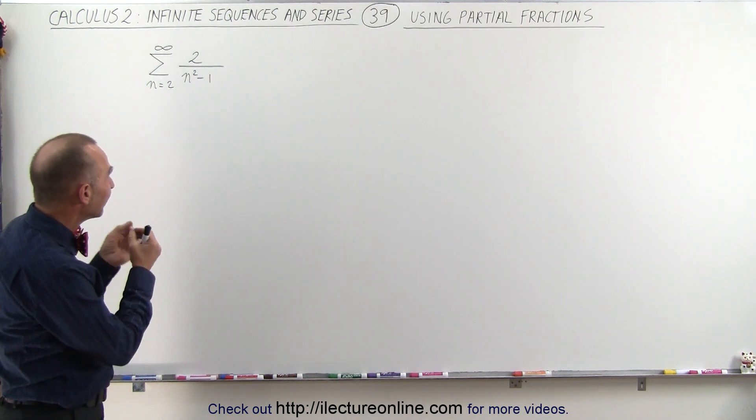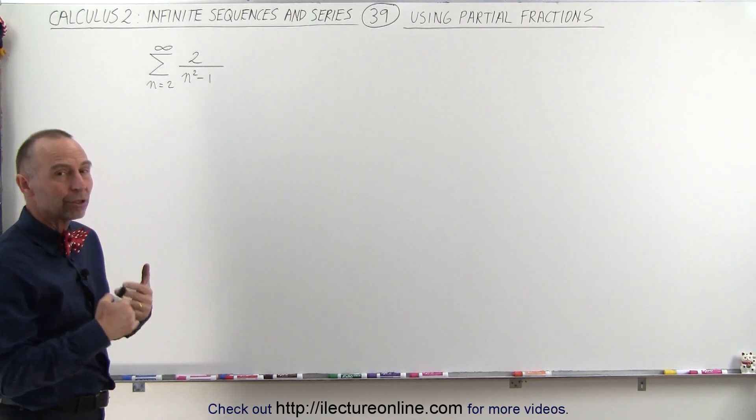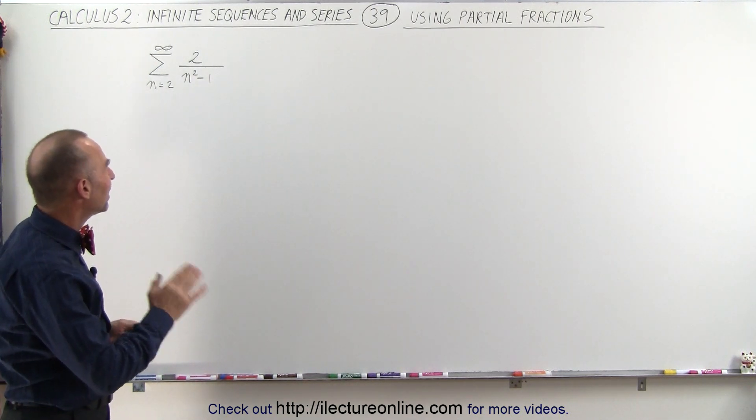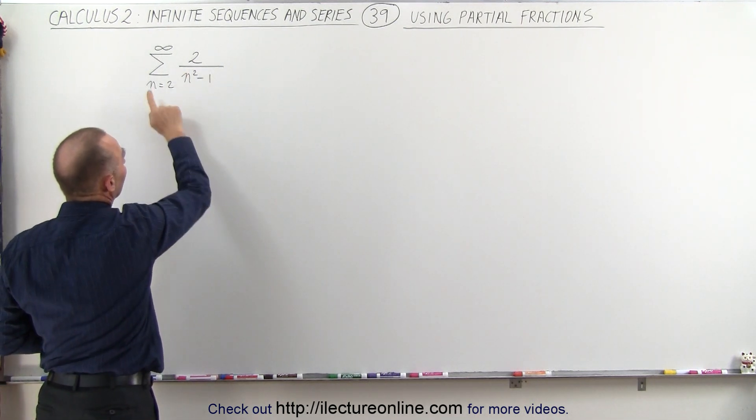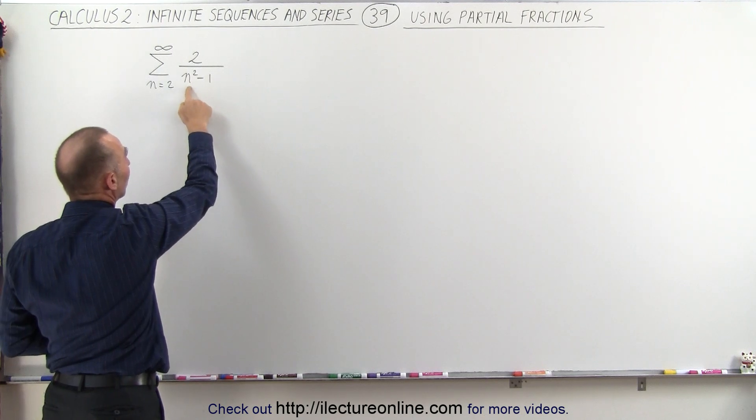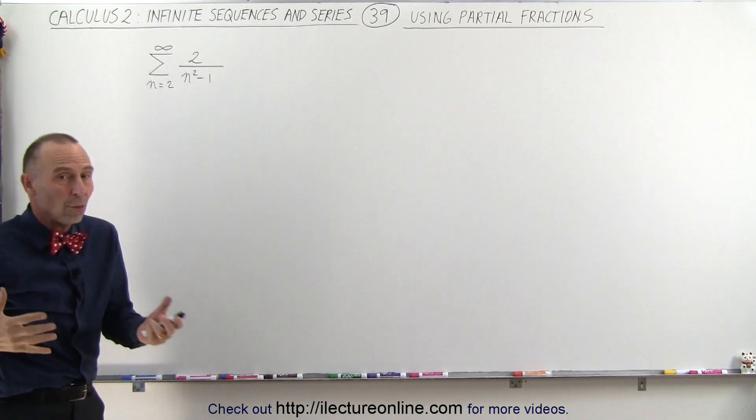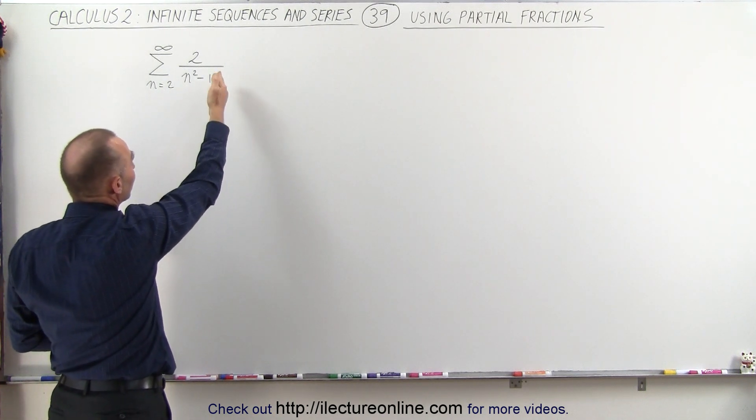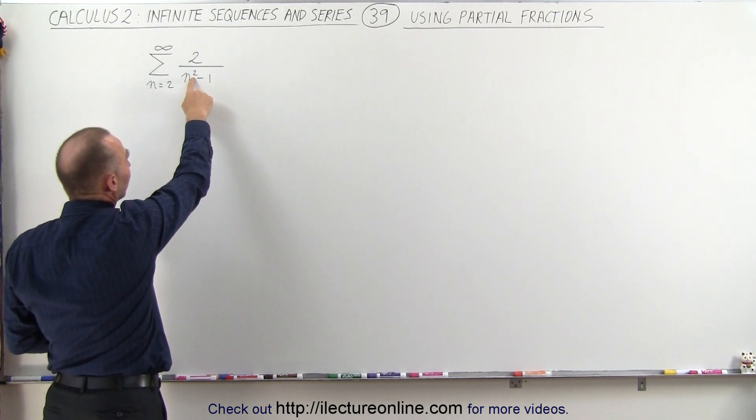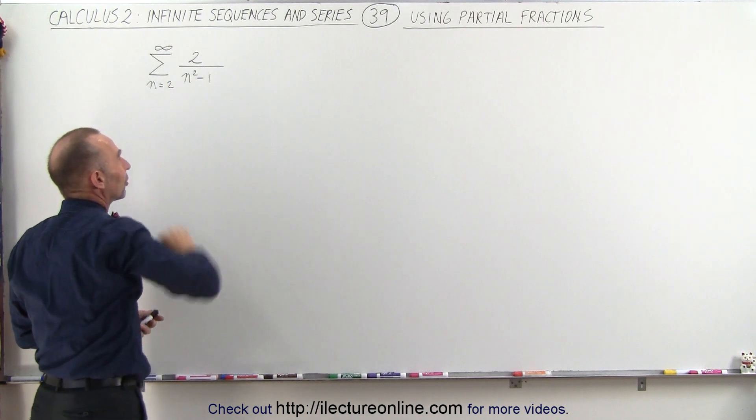Well, first let's see if we can kind of guess to see if this is going to converge. This looks a lot like a p-series. If you remove the minus 1 in the denominator, and notice as n becomes very large, the n squared minus 1 in the denominator is almost exactly the same as n squared. That looks a lot like the p-series, and the exponent is greater than 1, so we expect this to converge.